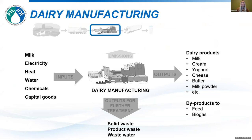Now Greg went through allocation for feed and the dairy farm; I will talk about allocation at the dairy manufacturing site. You need to account for all inputs coming into the site — milk, electricity, heat, water, chemicals, etc. — and then outputs going for further treatment: solid waste, product waste, wastewater, and emissions such as from cooling agents. You then allocate all emissions between the different dairy products: milk, cream, yogurt, cheese, butter, milk powder, etc., and potentially byproducts going to feed or biogas.